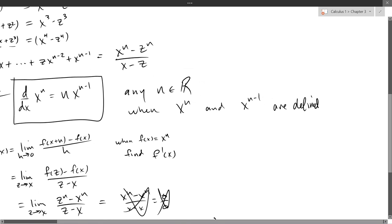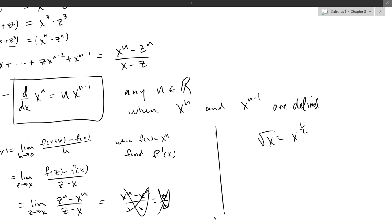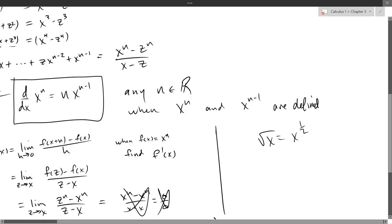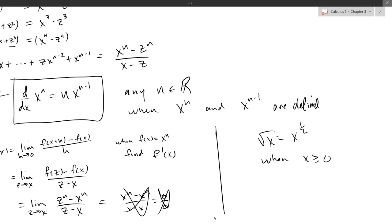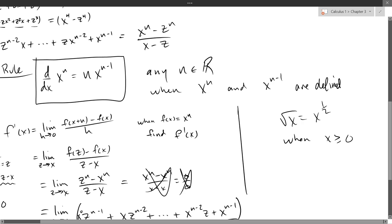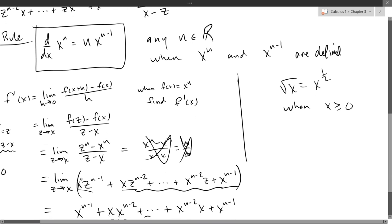When x to the n, x to the n minus 1 are defined. What do I have to be careful with if I have 1 half power? Square root. So I'm doing square root. So what do I need to be careful with? What type of x values? The x can't be negative. The x can't be negative right here. So if I have some fractional powers, I have to make sure I'm not going to have complex or imaginary numbers coming out of there. So other than that, it will work.